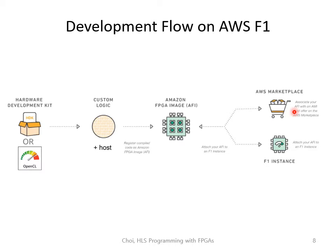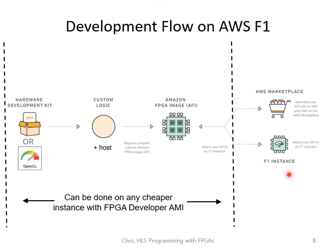You only need to run your AFI on an F1 instance, but you don't need to make an AFI on an F1 instance. You can actually make an AFI on any instance using the FPGA developer AMI. The reason we do this is due to the cost of AWS F1.